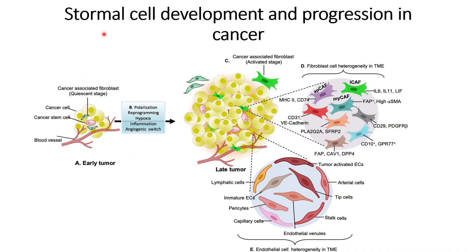In this video we will discuss stromal cell development and progression in the case of cancer. In healthy patients, stromal cells function as connective tissue that helps in organ functioning and in reducing the stress of the organs. This is a general overview of the role of stromal cells in normal patients.